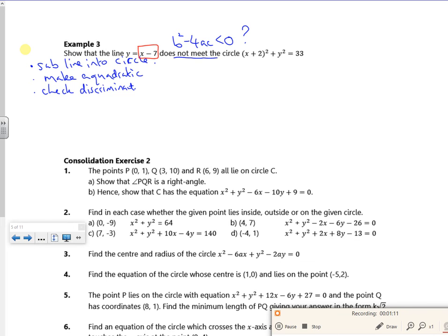Right then, so I'm going to put x minus 7 there. So I've got (x + 2)² plus (x - 7)² is 33. So I've got x² + 4x + 4 plus x² - 14x + 49 is 33. Right, so that'll give me 2x² - 10x plus 53 take 33, plus 20.